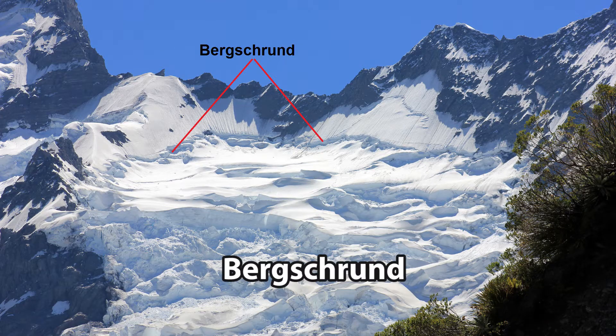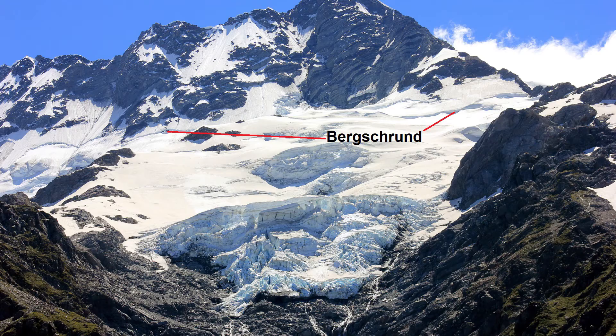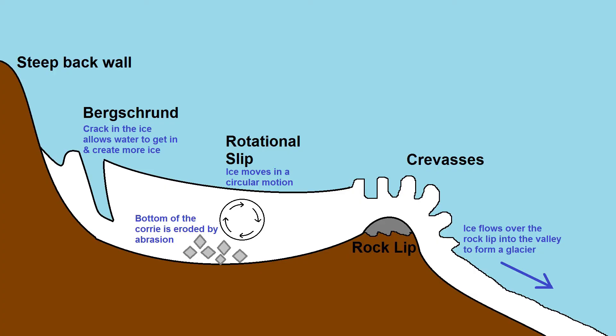Large crevasses on the top of the ice, called a bergschrund, allow water to flow onto the ice where it freezes to create more ice. The bottom of the Corrie is eroded by abrasion as the ice moves in a circular motion known as rotational slip.